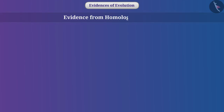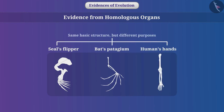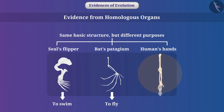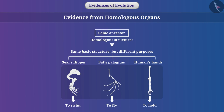Evidence from homologous organs: A seal's flipper, a bat's patagium, and human hands all have the same basic structure, but they are used for different purposes. For example, the patagium is used to fly, seal flippers to swim, and a man's hand to hold. Such structures are called homologous structures, and they suggest the same ancestor — that is, these organisms must have evolved from a common ancestor.